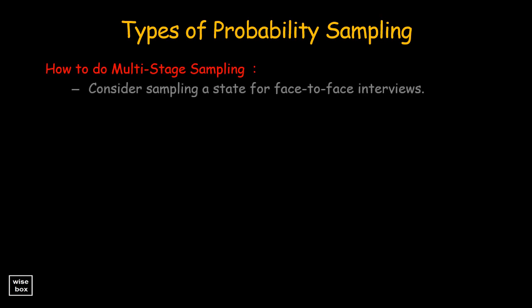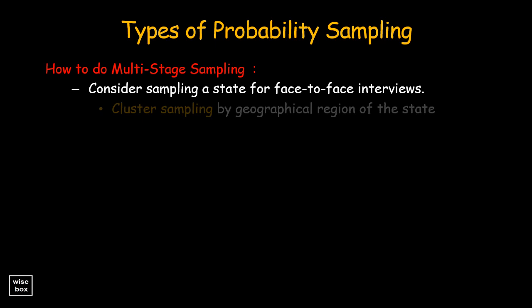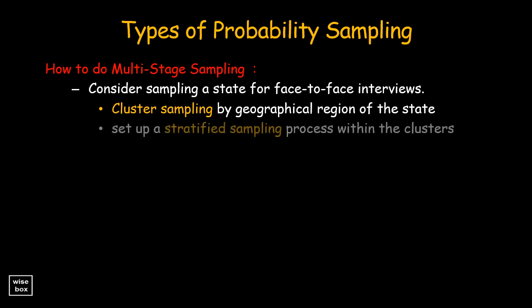Consider sampling a state for face-to-face interviews. As the first stage of the process, we would want to do some type of cluster sampling, possibly by geographical regions of the state. Then we might set up a stratified sampling process within the clusters. In this case, we would have a two-stage sampling process, with stratified samples within cluster samples.